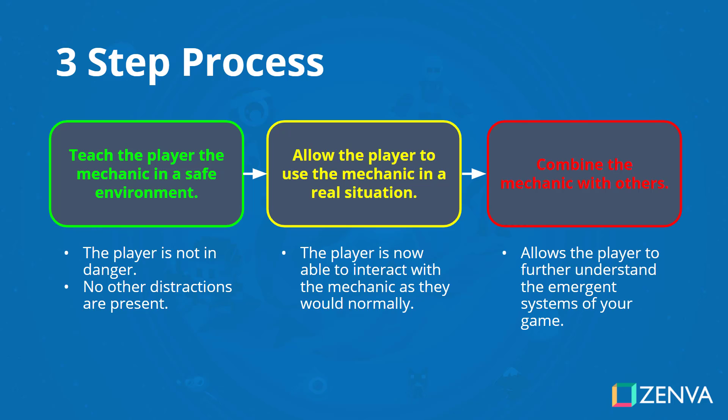The third step is to combine the mechanic with others, and this allows the player to further understand the emergent systems of your game. If your game has various different systems that can interact with each other, then this is a great step to add, as it can further reinforce both the new mechanic and the old mechanic that is now interacting.